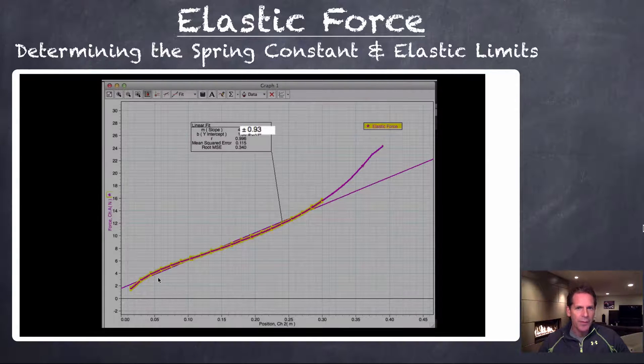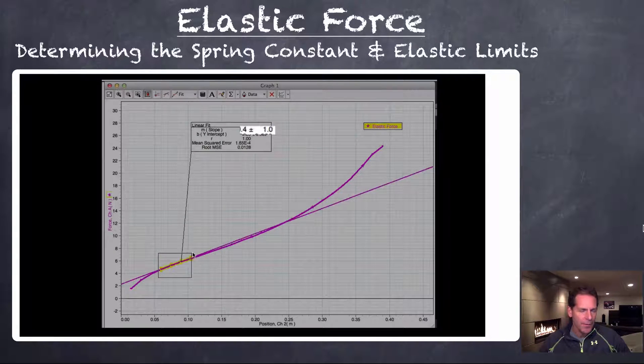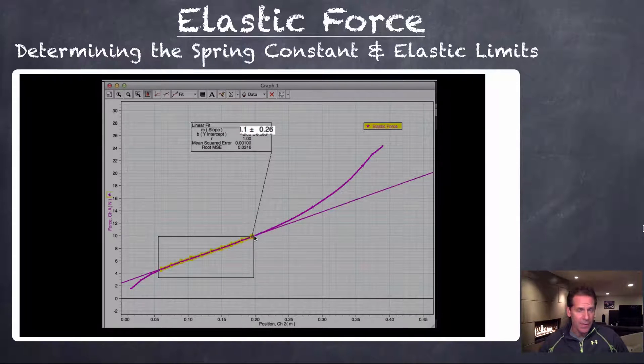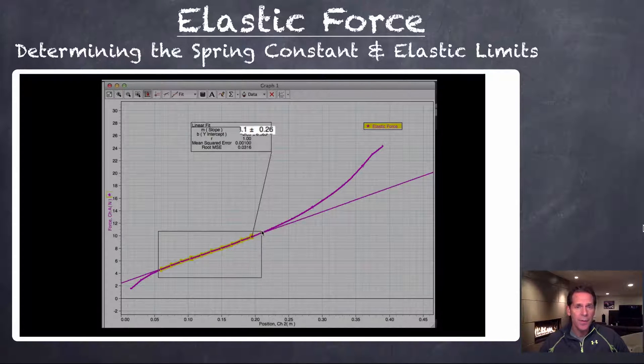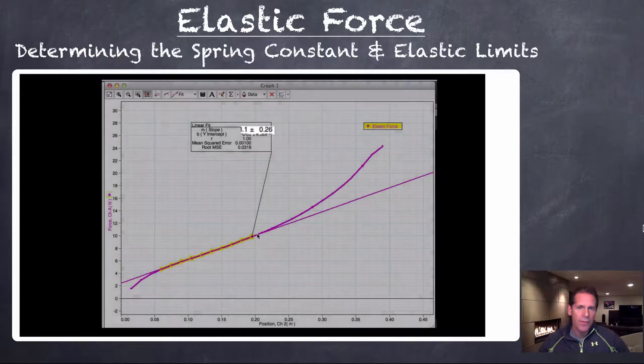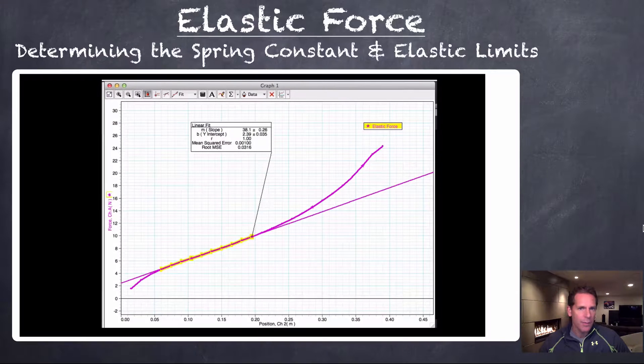As you experiment with it, you'll be able to reduce your precision and get a much better result. In this case, we can get down below 0.3. In this case, 0.26 newtons per meter for the precision in our slope. So this would be a very nice linear region where the elastic band would behave in a predictable way.